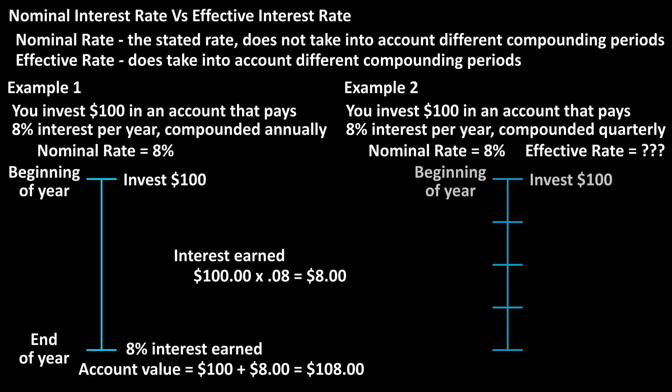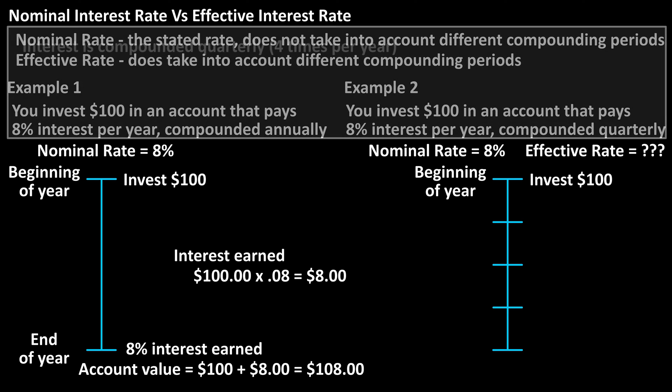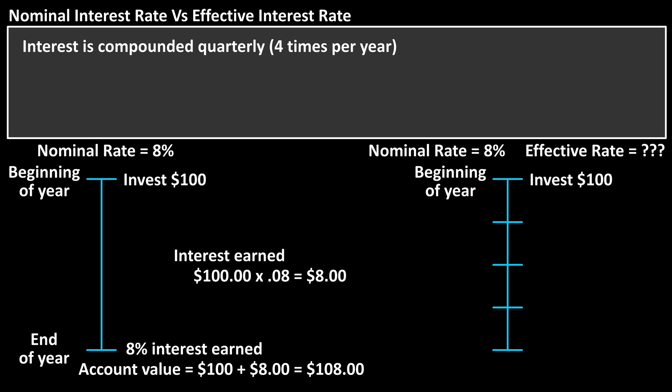Here is a timeline for one year. At the beginning of the year, you invest $100. The interest for this account is compounded quarterly, 4 times per year. 12 months divided by 4 equals 3, so every 3 months, interest will be compounded or added to the account.